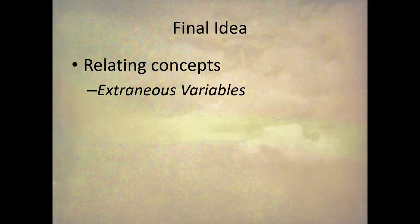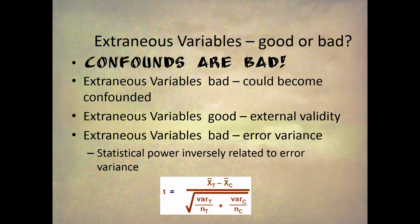Before ending this series, let's relate all these concepts — the different validities — through the idea of the extraneous variable. Extraneous variables: are they good or bad? We know confounds are bad, and extraneous variables can accidentally become confounded. So in that way, extraneous variables are definitely bad. However, they are also associated with good external validity.